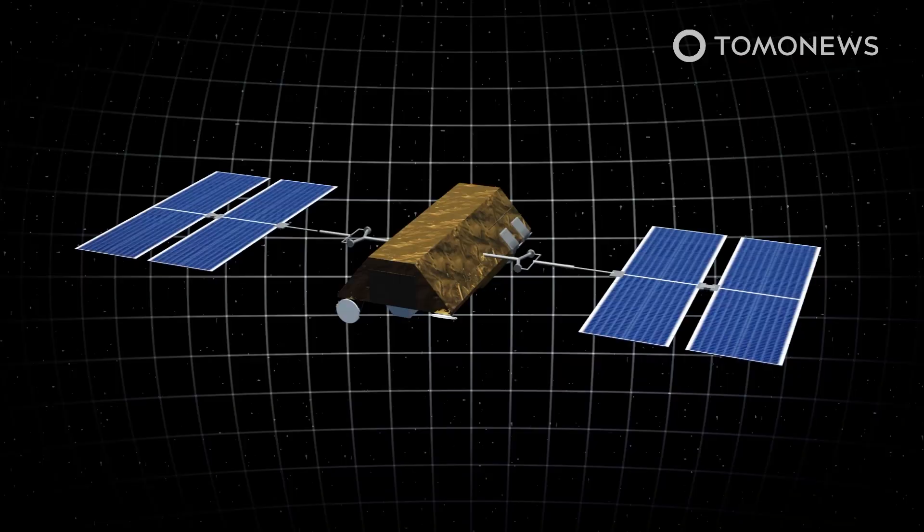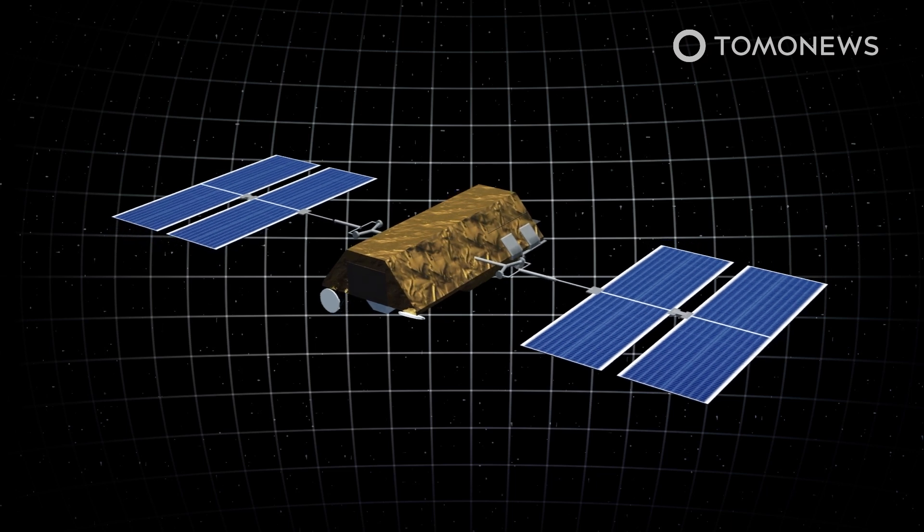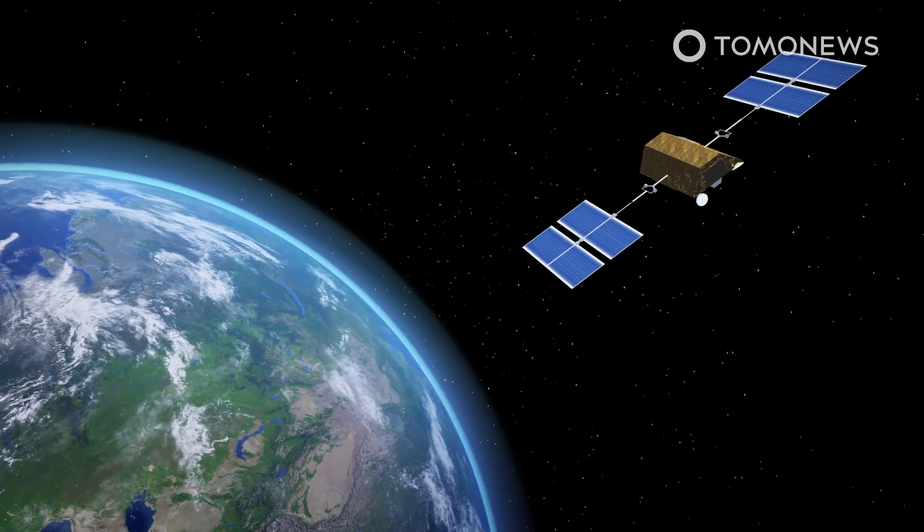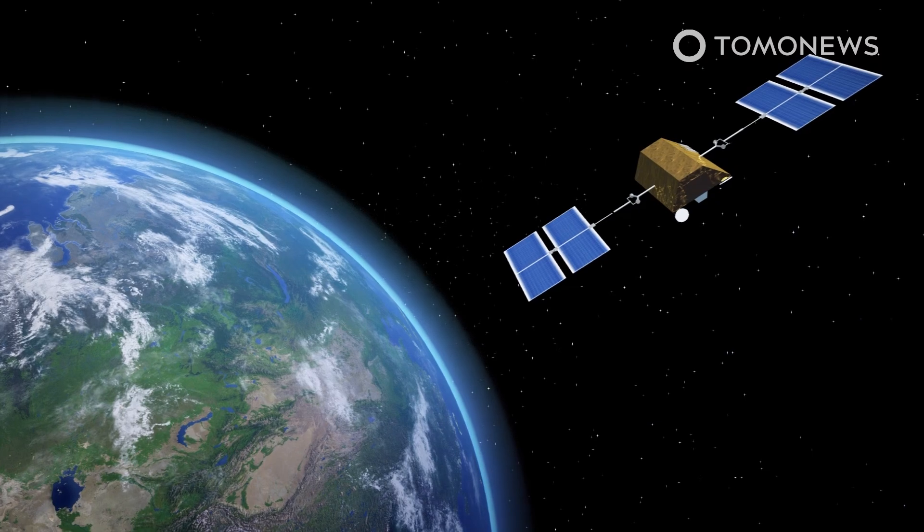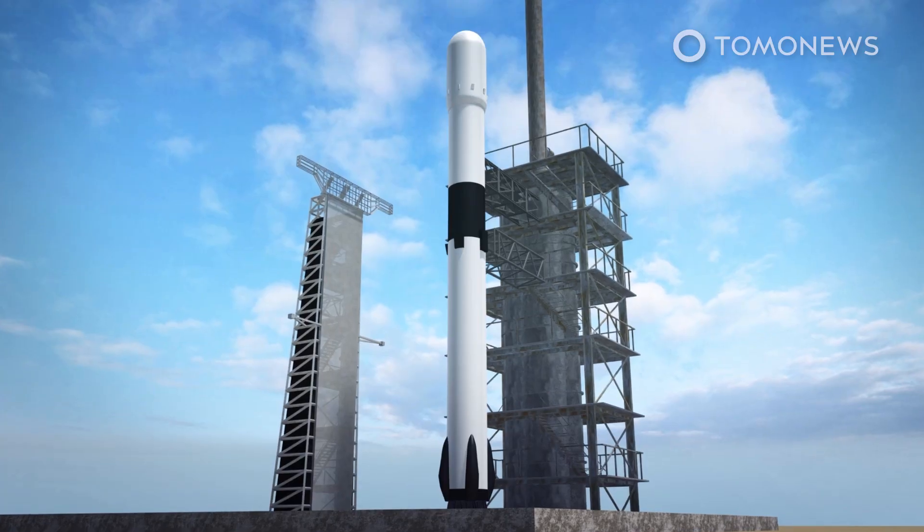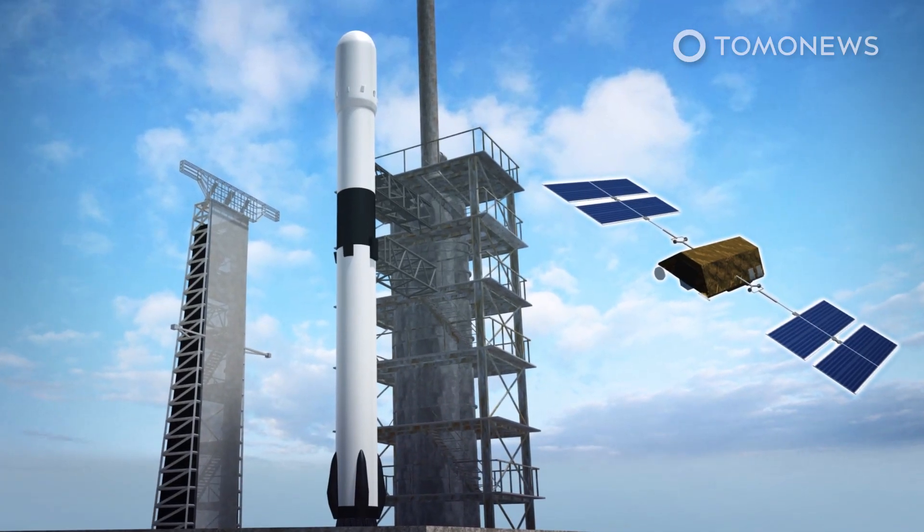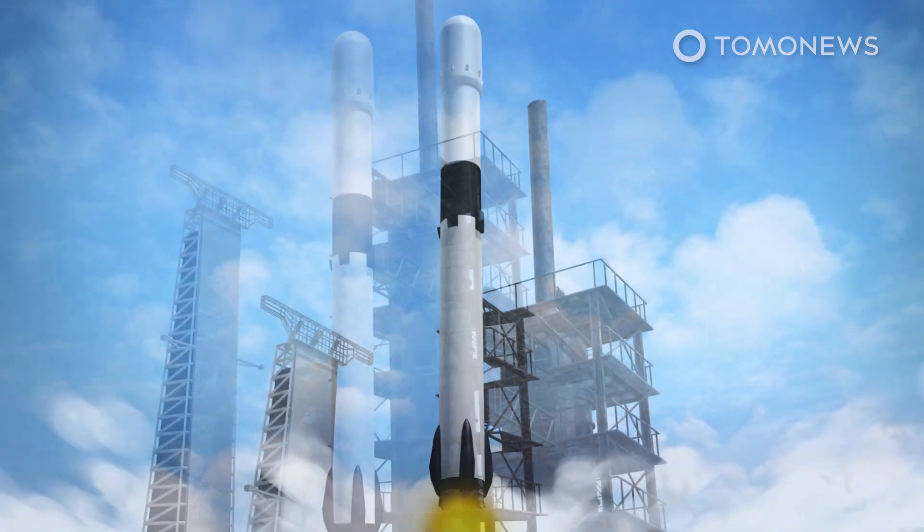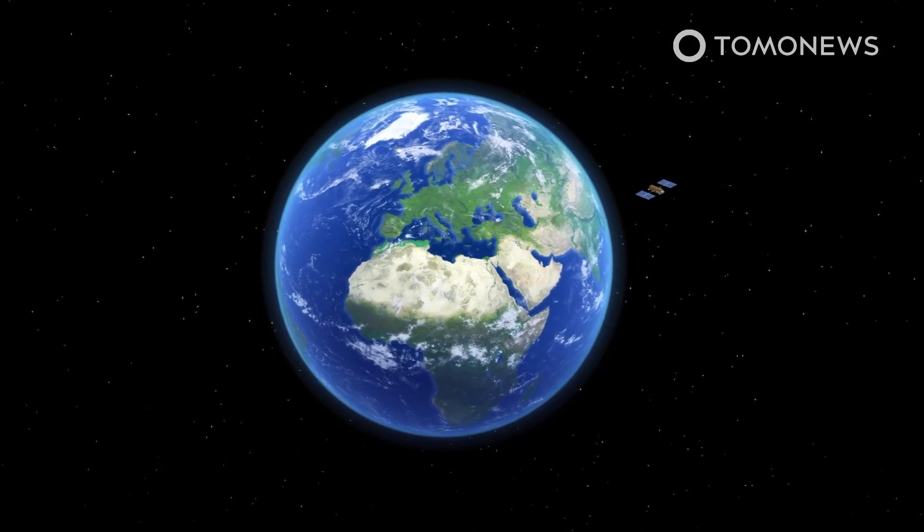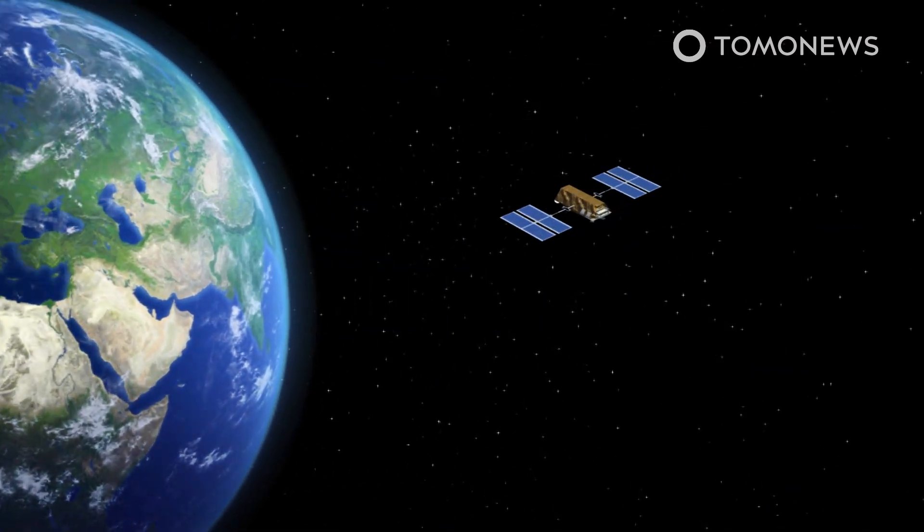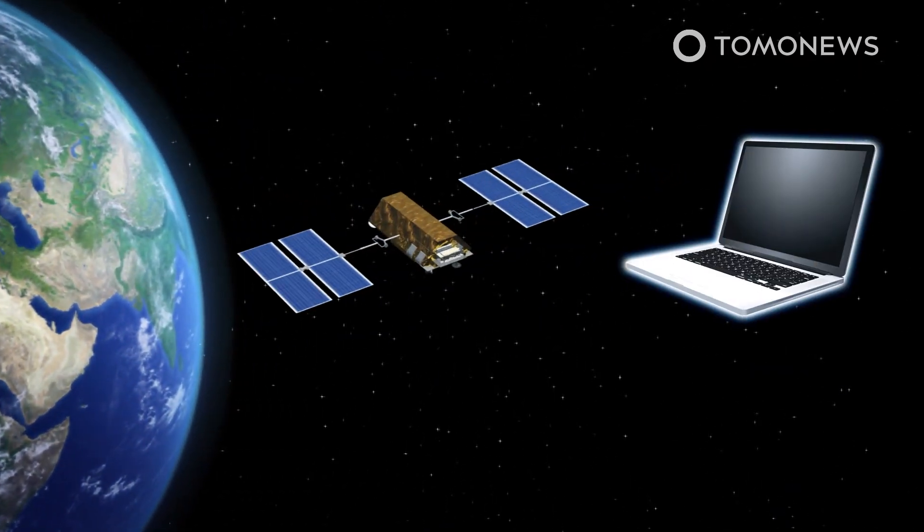SpaceX is in the midst of launching a proposed 42,000 satellites as part of Starlink, which is designed to provide low-cost internet to remote locations and, according to Space.com, the company had already launched more than 1,900 Starlink satellites by January 2022, with the U.S. Federal Communications Commission so far granting it permission to fly 12,000 Starlink satellites.